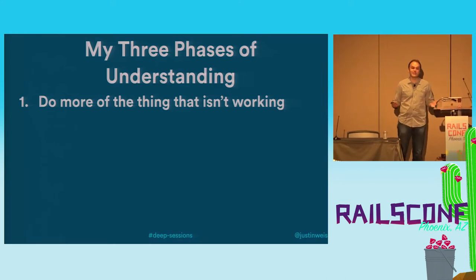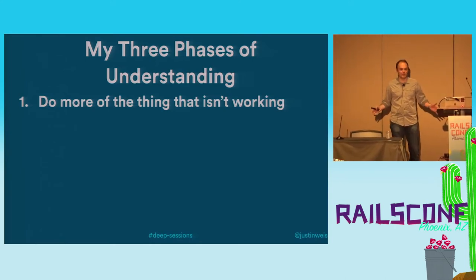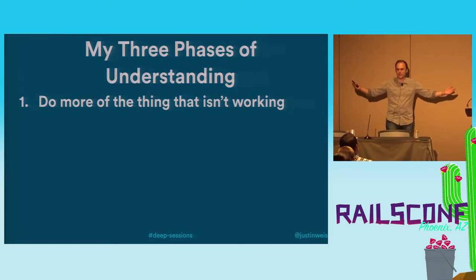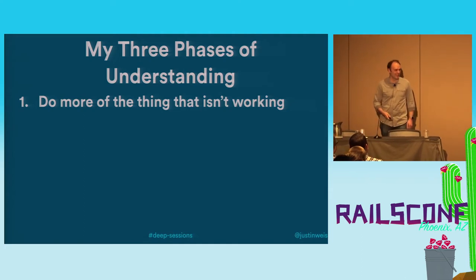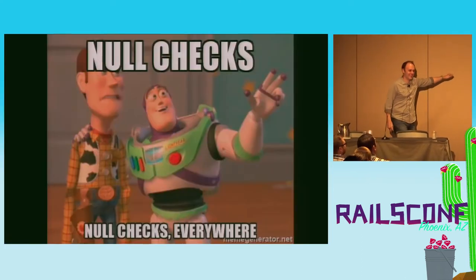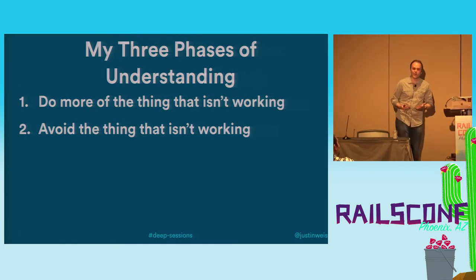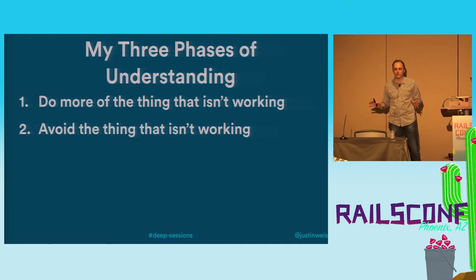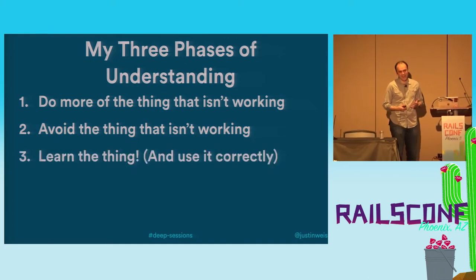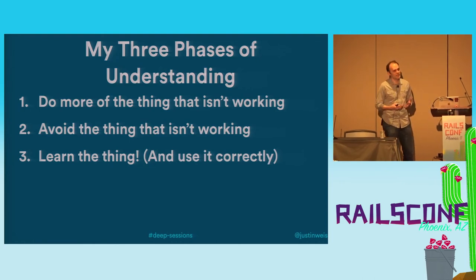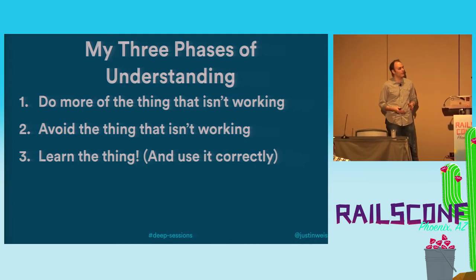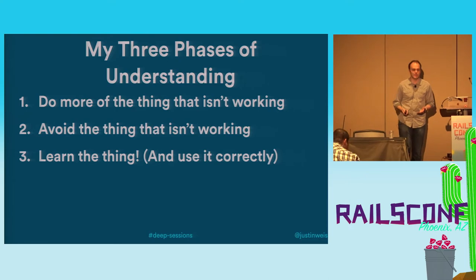So this is what I did: I didn't understand it, so I just did what I was already doing, harder. The code I wrote wasn't working, but that's okay — I'll just write more code, null checks everywhere. When that didn't work, I tried to avoid them. Sessions are terrible, let's not use them, let's just make the user log in on every page. But then I got a little more mature and realized this problem wasn't going away, so I spent the time to really understand sessions at a deep level and construct a mental model that worked.